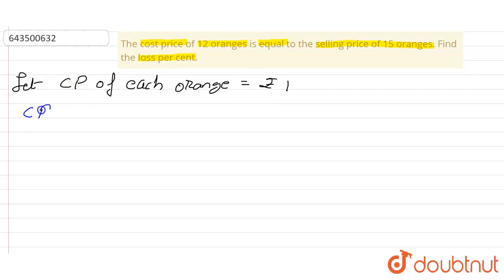...the CP of 15 oranges is equal to rupees 15. And what else they gave us? They gave us the SP of 15 oranges is equal to...